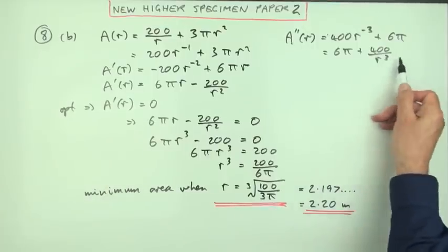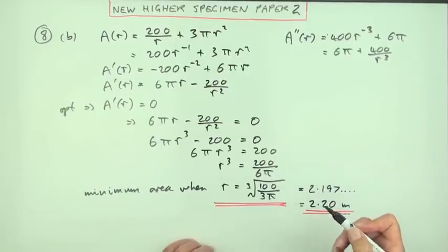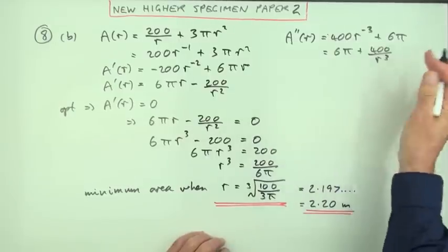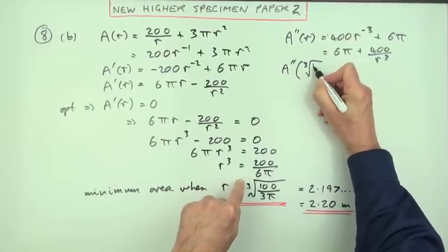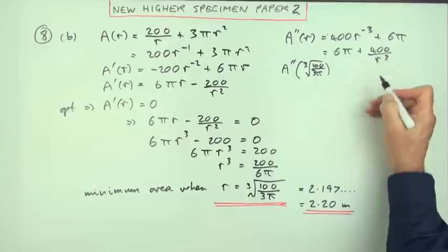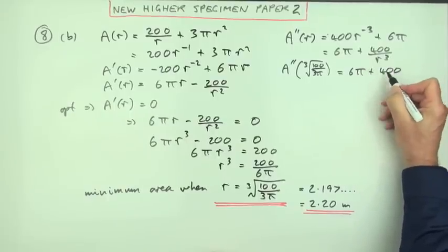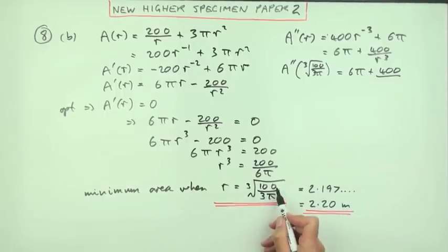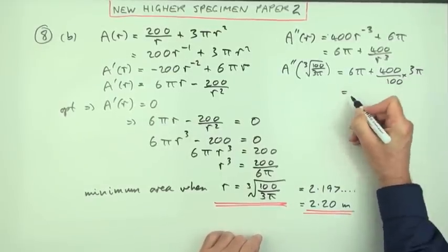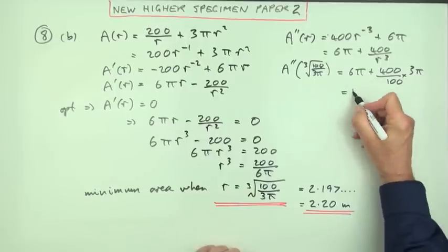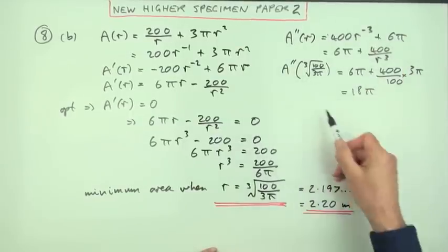I'll put it in anyway because I can see there's a mark in the marking scheme. A double dashed of 100 over 3 pi cubed: 6 pi plus 400 over R cubed. When you cube it, it'll turn back to 100 over 3 pi. Dividing by that would be multiplying by 3 pi over 100, so that's 18 pi. You knew it was going to be positive anyway.